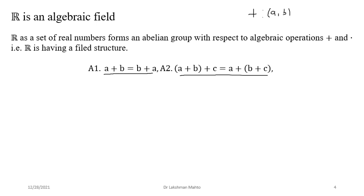Addition takes a pair of elements a and b and transforms them into a + b. Addition is a binary operation; multiplication is also a binary operation. Similarly, multiplication takes an ordered pair as input and gives output a · b. That is why both addition and multiplication are called binary operations.